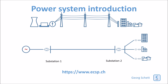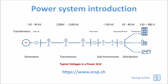The single line diagram shows just one phase instead of three. We have the generator, then the transformers at both line ends, then the line, and connections to loads. This is an example of typical voltage levels in a power grid. Generators feed at 10 to 30 kV, then a step-up transformer feeds the long-distance transmission network. The voltage level on long-distance transmission networks is between 220 kV and recently 1100 kV, such as in India and China where they have very long AC transmission networks.